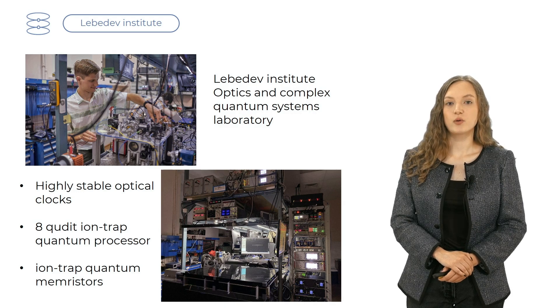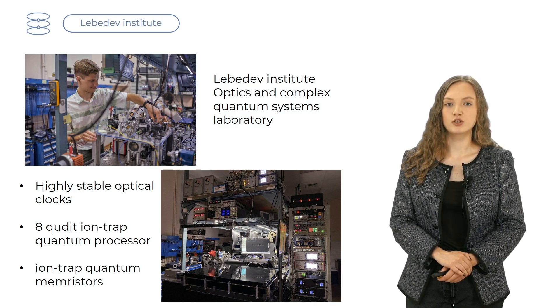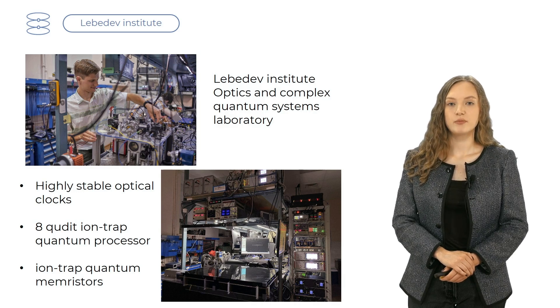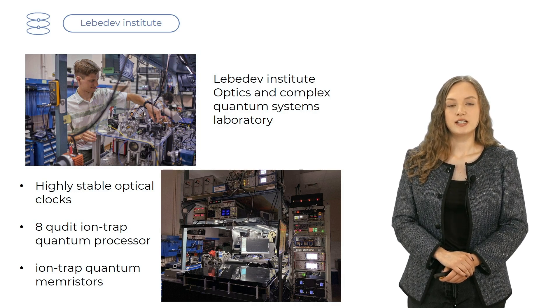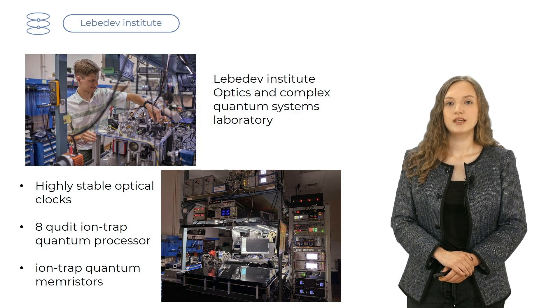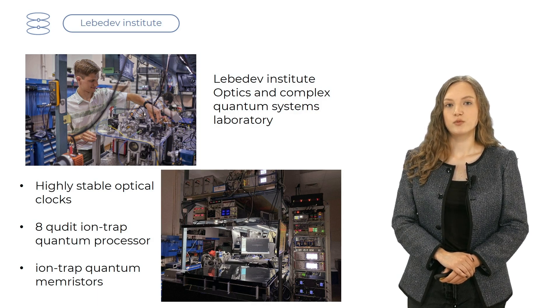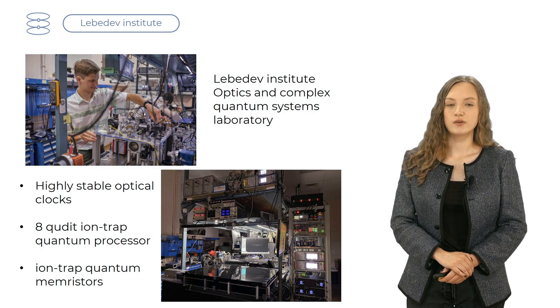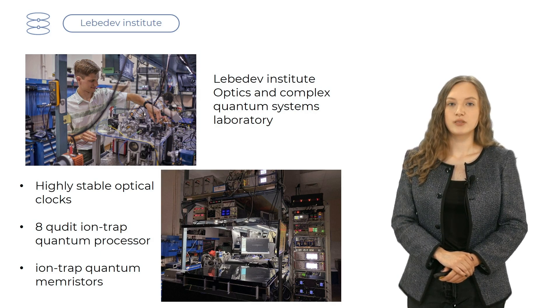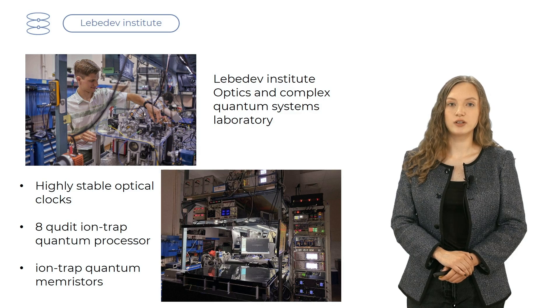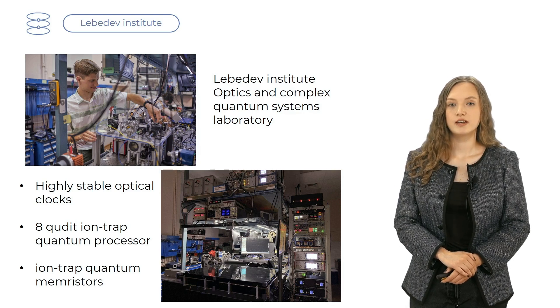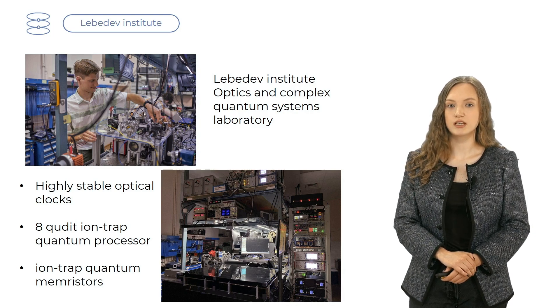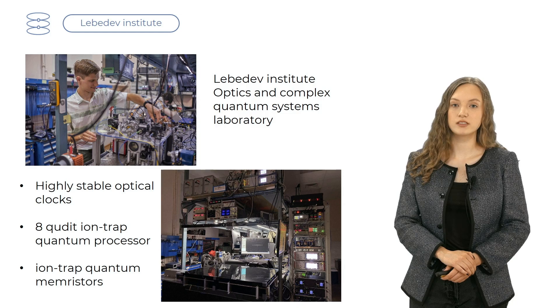Ions allow to store quantum information using superposition of not just two states, like 1 and 0 in qubits, but 4 states, and this element is called qudit. In 2022, one of the world's first universal ion trap quantum processors was created by our group, possessing 16 qubits encoded in 8 ions. These developments require tackling complex engineering challenges to enable successful quantum operations with ions.